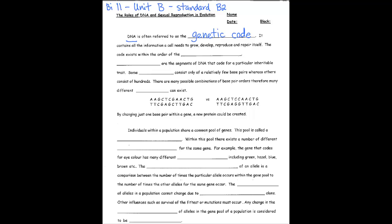It contains all the information a cell needs to grow, develop, reproduce, and repair itself. The code exists within the order of the nucleotides. And some examples of nucleotides are the ATC or GCG.